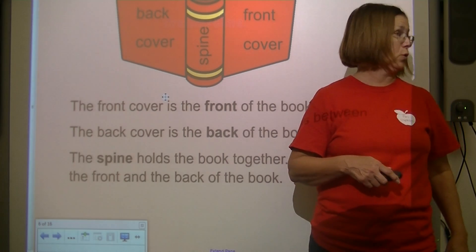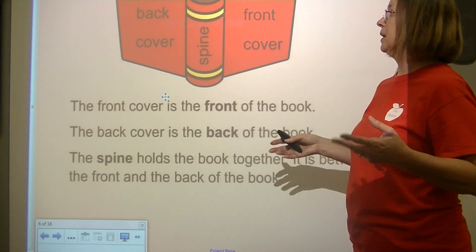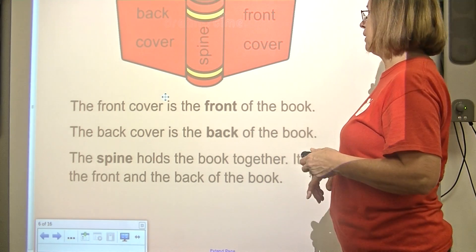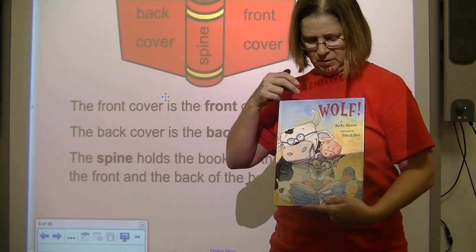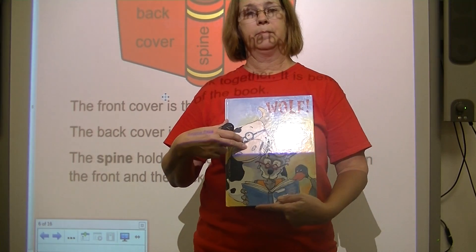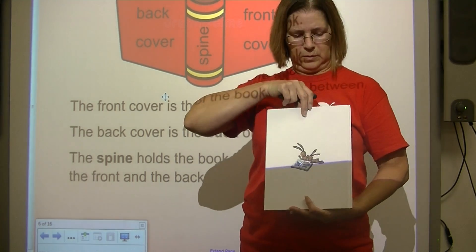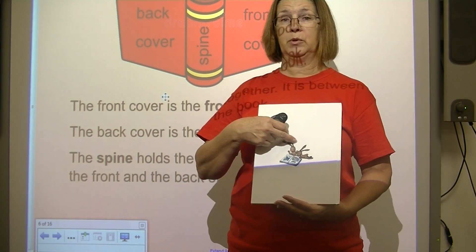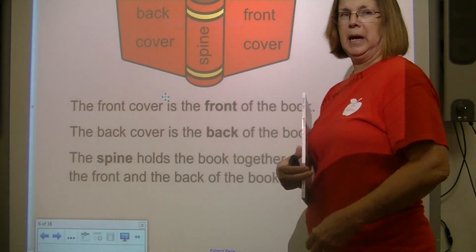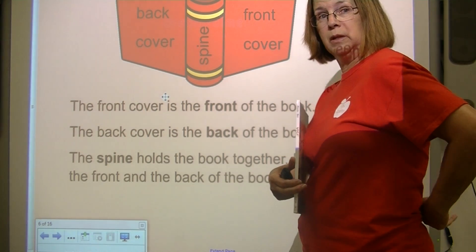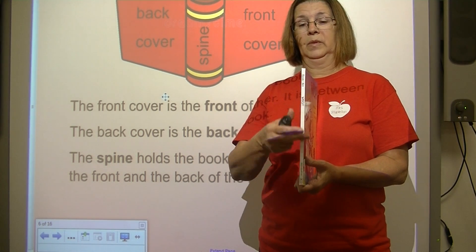Before we begin to read our story, we need to find out about what is a book and what are the parts of the book. The first thing we need to know is the front cover — the front cover is the front of the book. This is the front of this book. The back cover is the back of the book, so if I turn it around, this is the back cover. The spine holds the book together. We have a spine — it's a backbone, it holds us together — and the spine of a book holds the book together. This is the spine.